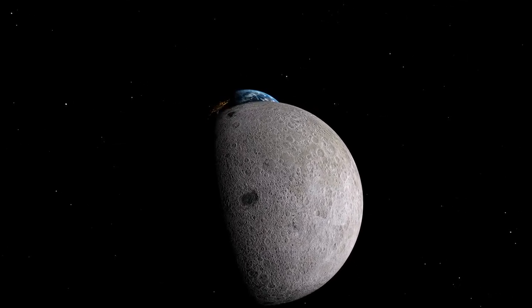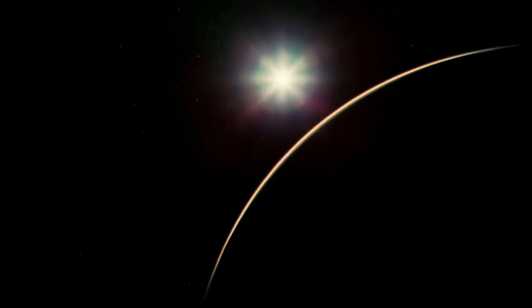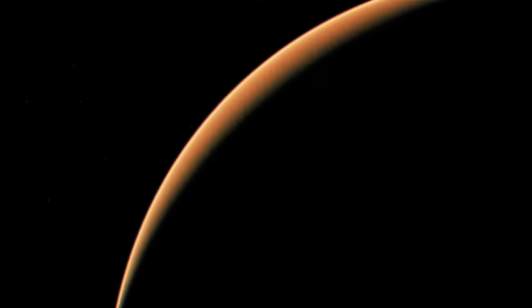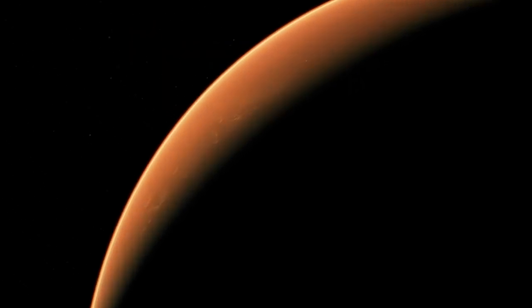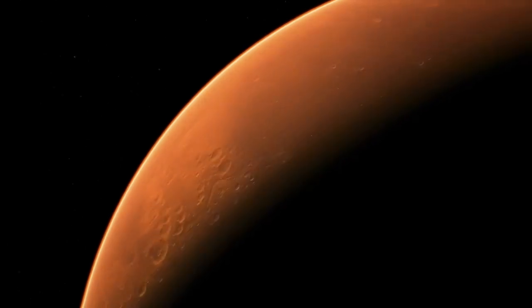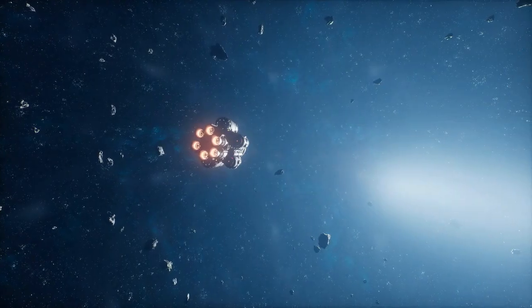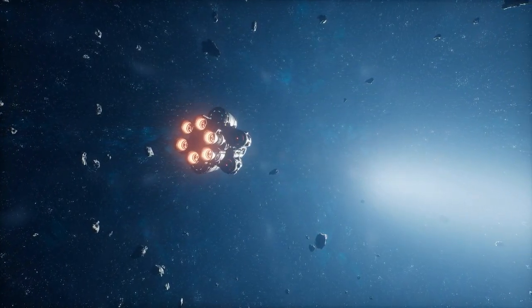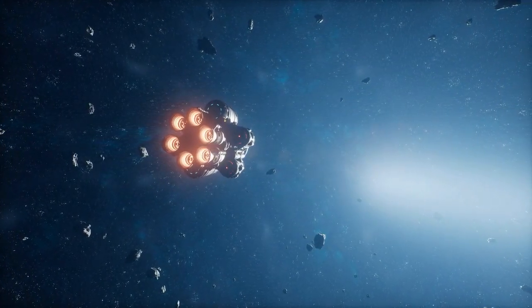Rogue planets are almost invisible. They emit no light and are nearly undetectable unless they pass in front of a bright background object or are picked up by sensitive infrared telescopes. This means a rogue planet could be hurtling through space toward our solar system, and we wouldn't know until it's dangerously close.